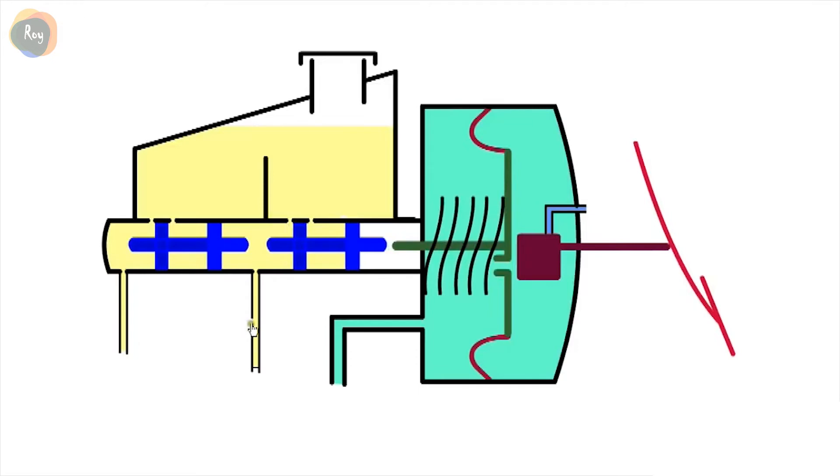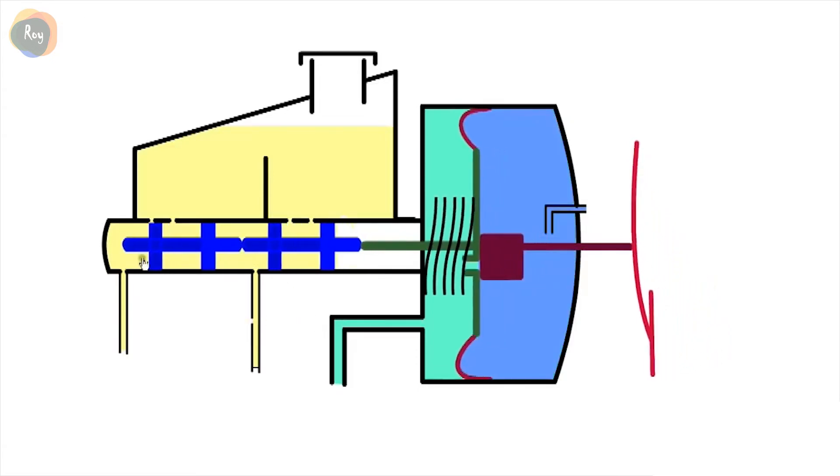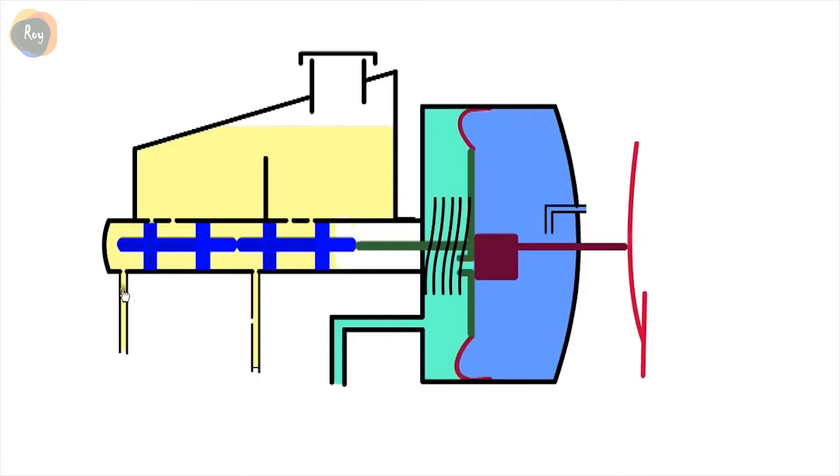If we have a leak in the right circuit, this piston will strike the other piston and build pressure in the healthy circuit. As the brakes will only be applied to two wheels, braking force will be compromised.